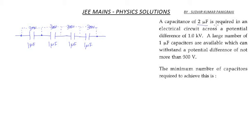A capacitance of two microfarad is required in an electric circuit across a potential difference of one kilovolt. A large number of one microfarad capacitors are available which can withstand a potential difference of not more than 300 volts.